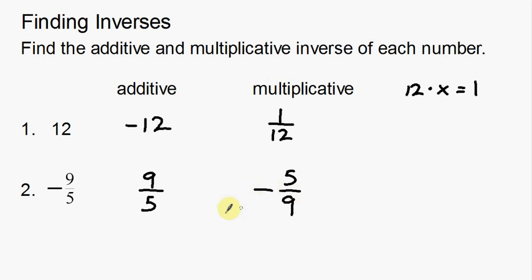Notice that the negative stayed there. When I multiply, I have to take a negative times a negative to get a positive. And then nine on top, nine on bottom to cancel. Five on top, five on bottom to cancel, and then everything is just going to cancel to one. And so those are your multiplicative inverses.